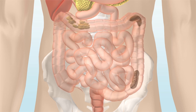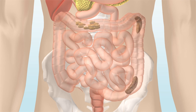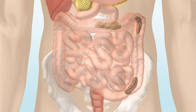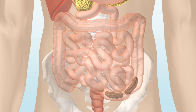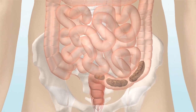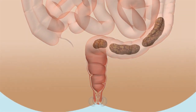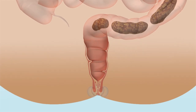The stool is then pushed through the intestine towards the rectum by a series of muscle contractions, known as peristalsis. You have three to four major peristaltic movements each day. The time it takes for food to pass through your digestive system is called the transit time. The average transit time for females is 2.4 days and 1.9 days for males.